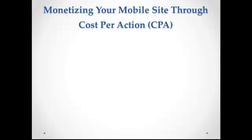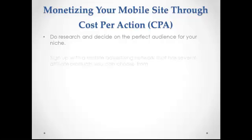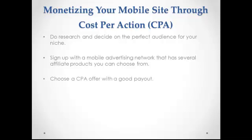Here are some tips on how you can get the upper hand on CPA affiliate marketing. Decide on your niche — do your research and choose a niche that interests you. Some of the most popular niches that enjoy a great deal of traffic are dating, shopping and retail, iPhone apps, and online games. Sign up with a mobile advertising network that has several affiliate products to choose from. Make sure the advertising materials are made for mobile devices. Choose a CPA offer with a good payout — at least $1.50 for every sale made. Check the offer and make sure it is easy for prospective clients to read and complete. A brief and compelling call to action can lead to high conversion rates.